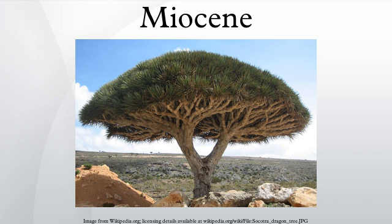Mountain building took place in Western North America, Europe, and East Asia. Both continental and marine Miocene deposits are common worldwide, with marine outcrops common near modern shorelines. Well-studied continental exposures occur in the North American Great Plains and in Argentina. India continued to collide with Asia, creating dramatic new mountain ranges. The Tethys seaway continued to shrink and then disappeared as Africa collided with Eurasia in the Turkish-Euro-Arabian region between 19 and 12 Ma.